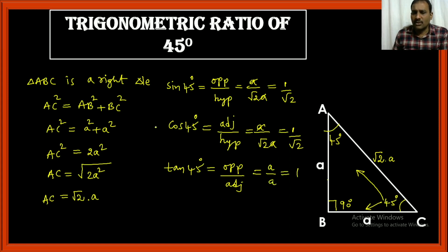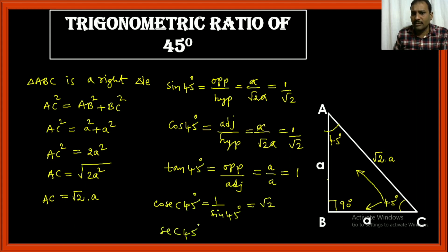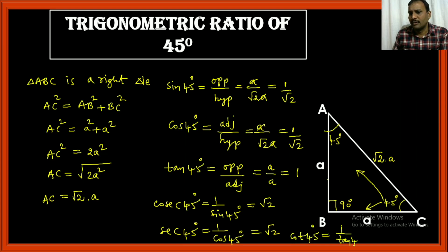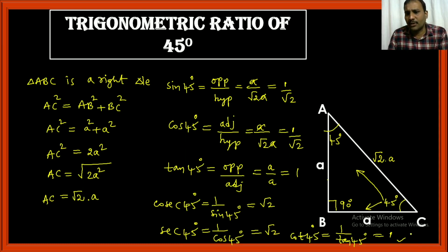Taking reciprocals: cosecant 45 = 1/sin 45 = √2. Secant 45 = 1/cos 45 = √2. Cot 45 = 1/tan 45 = 1/1 = 1. These are all the trigonometric ratio values for 45 degrees.